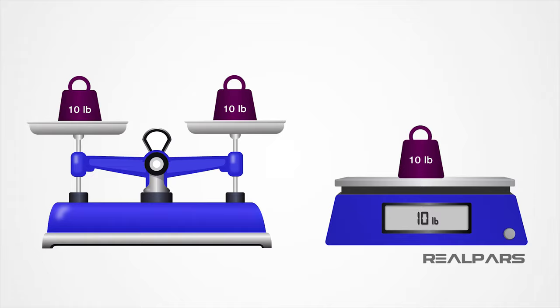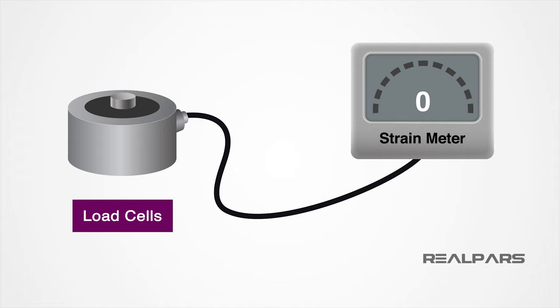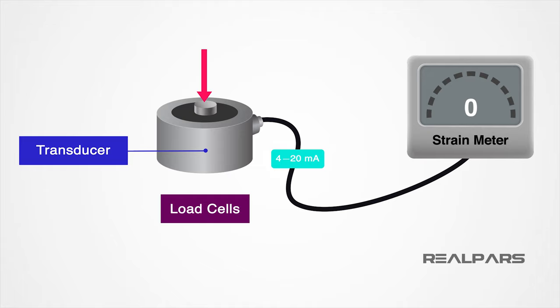The first thing we need to know about a load cell is a definition of what we are talking about. A load cell is a force gauge that consists of a transducer that is used to create an electrical signal whose magnitude is directly proportional to the force being measured.